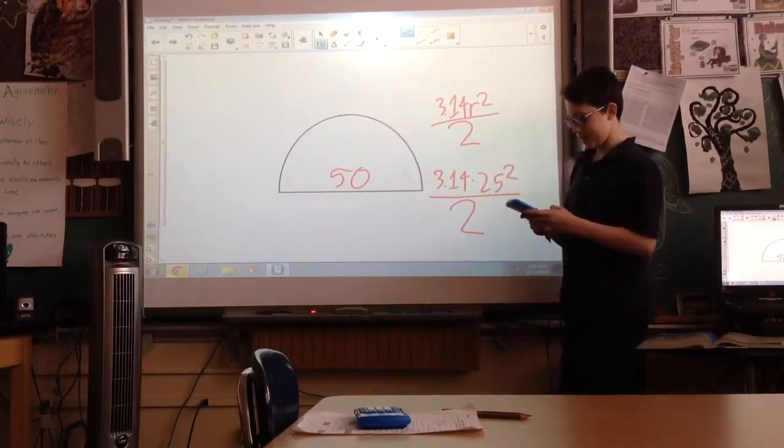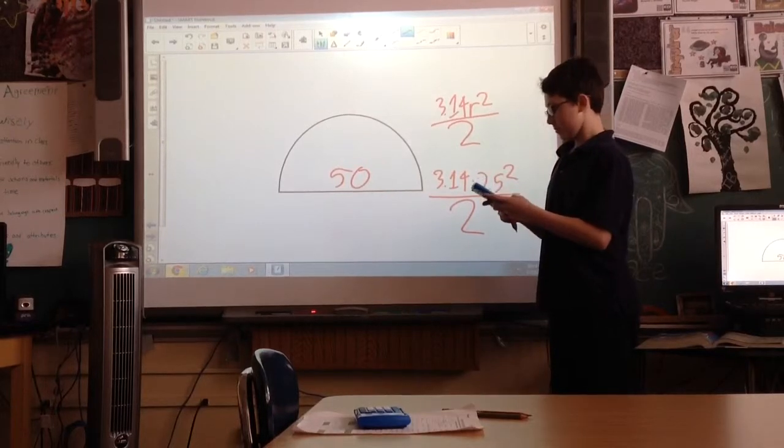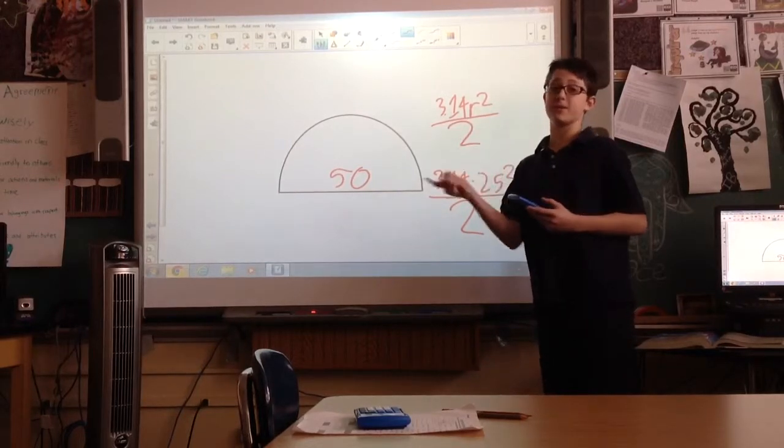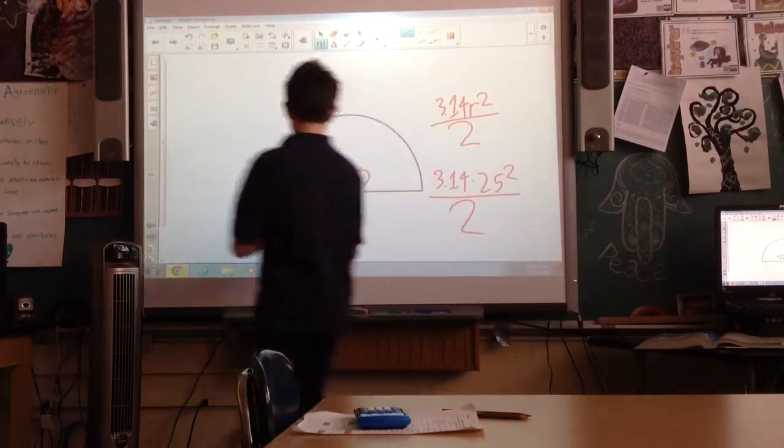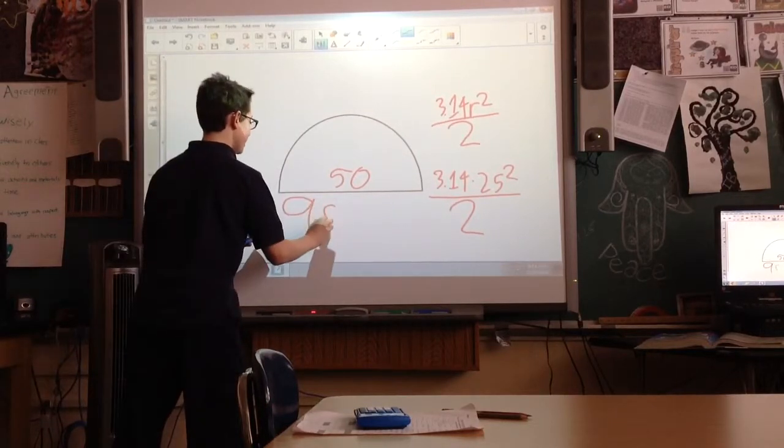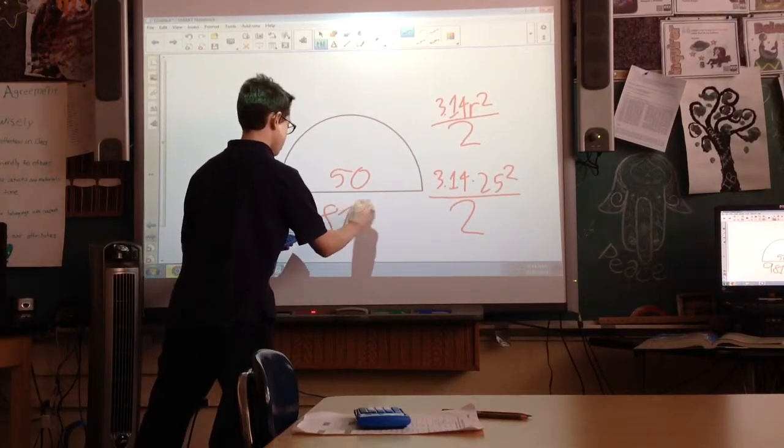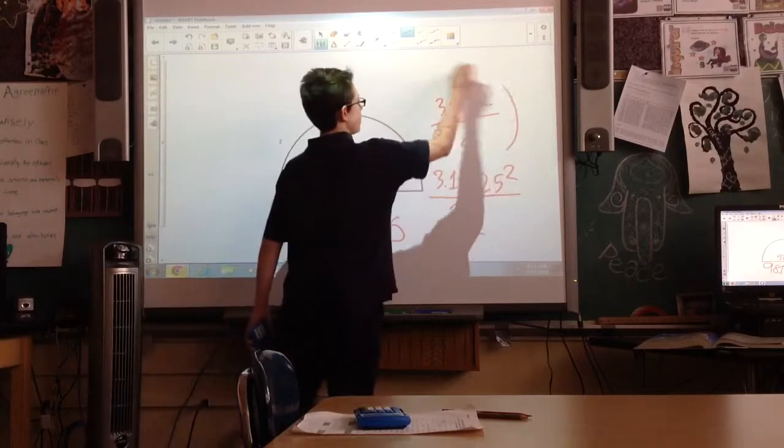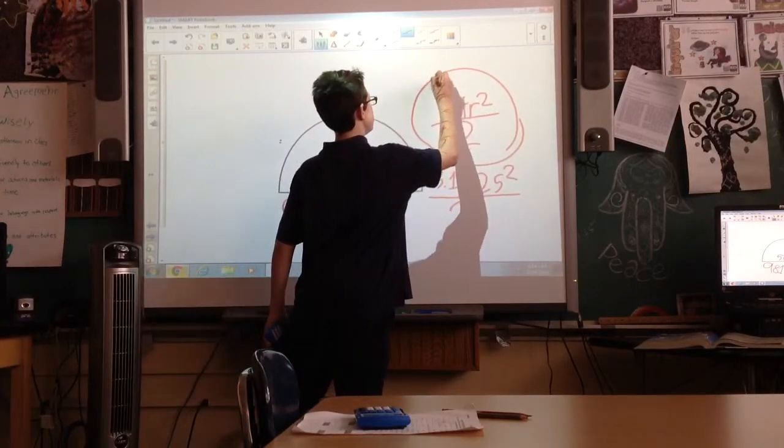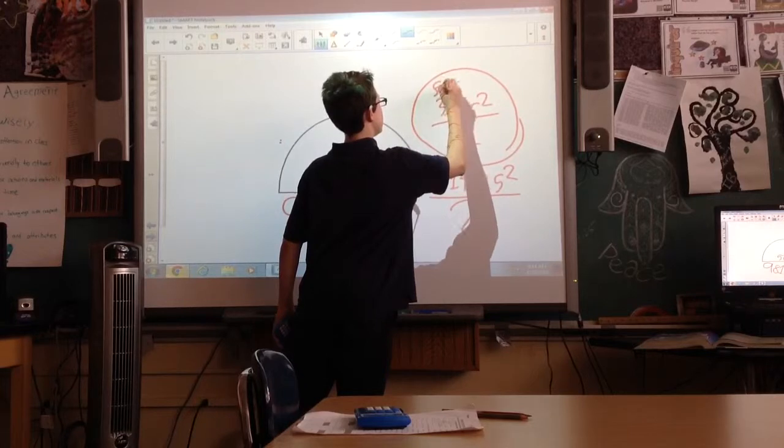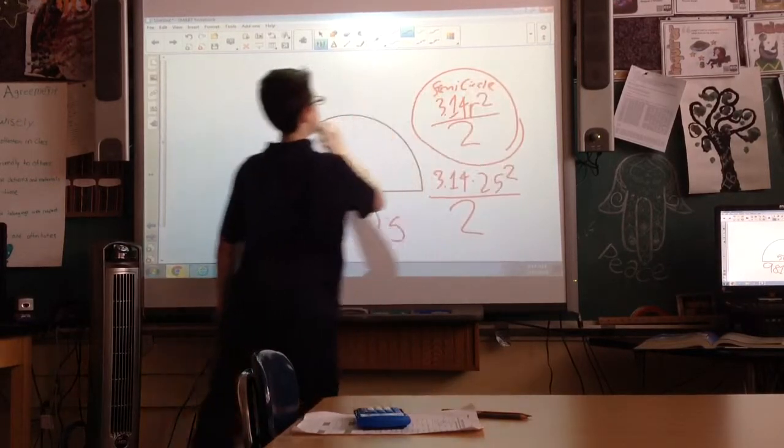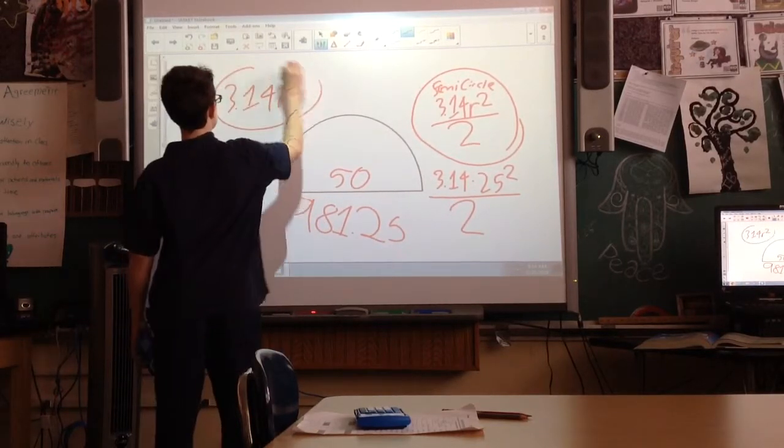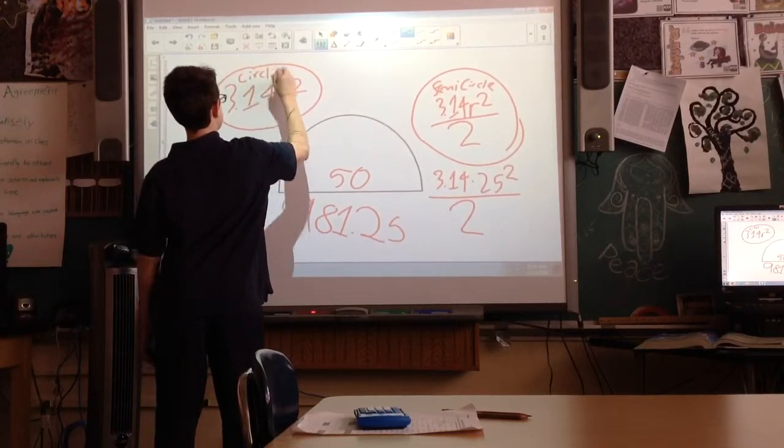3.14 times 25 squared, divided by 2, you've got to remember to divide it by 2, is 981.25. And this is how you get the area of a semicircle, and this is a regular circle. Yay!